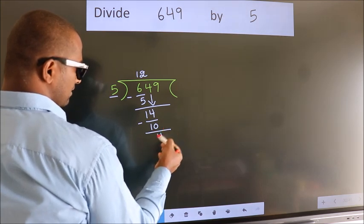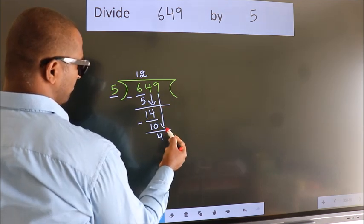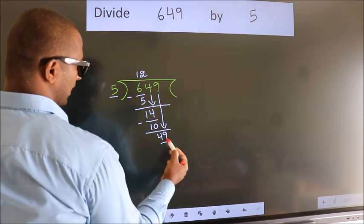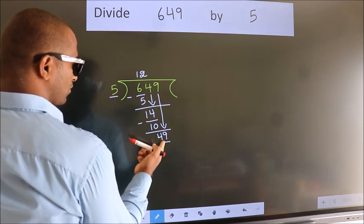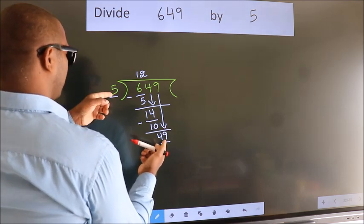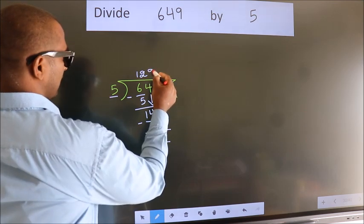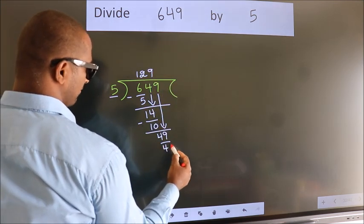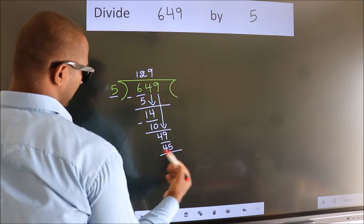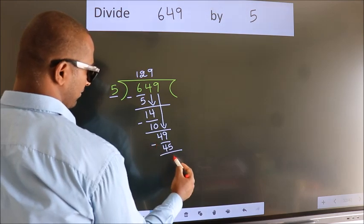After this, bring down the beside number. So, 9 down. So, 49. A number close to 49 in the 5 table is 5 nines 45. Now we subtract. We get 4.